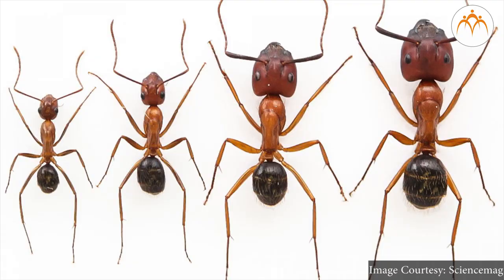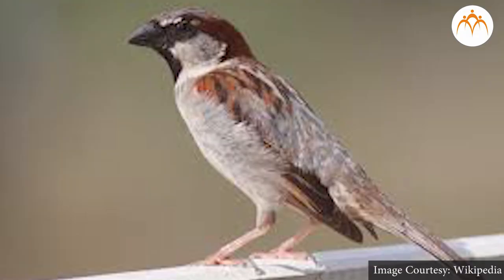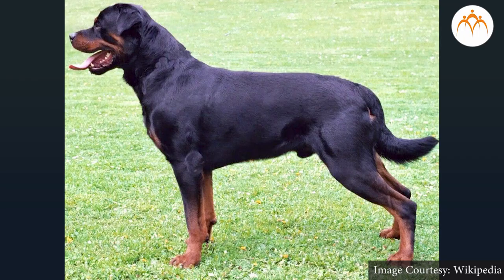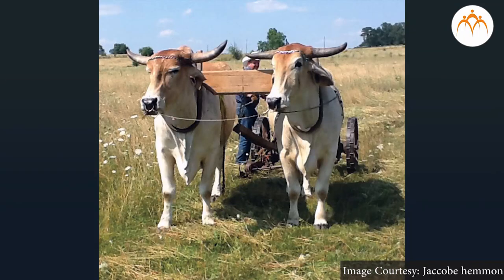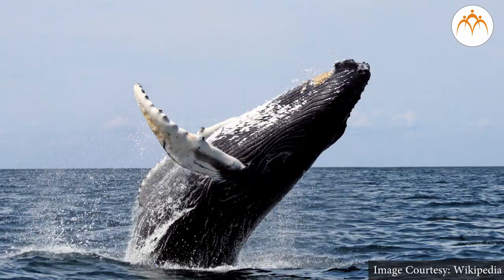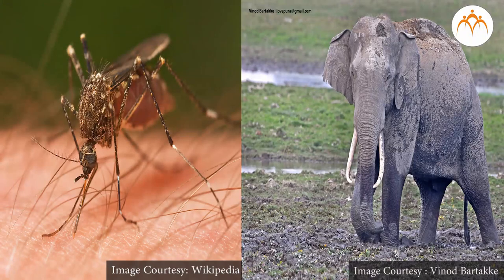We see various kinds of animals around us — ants, mosquitoes, sparrows, cats, dogs, oxen, horses, to elephants and whales. Some are very small and some are large.